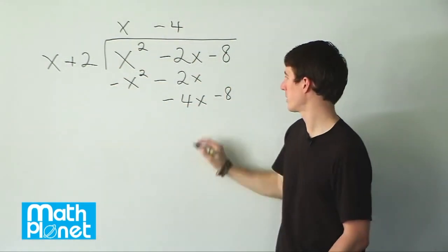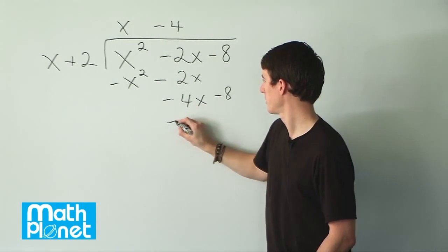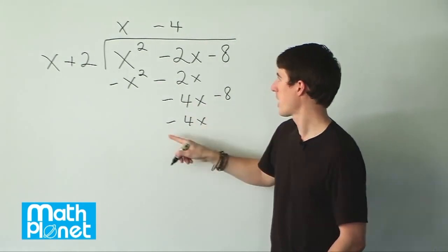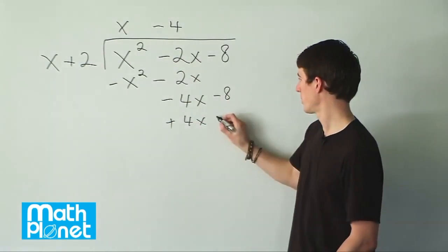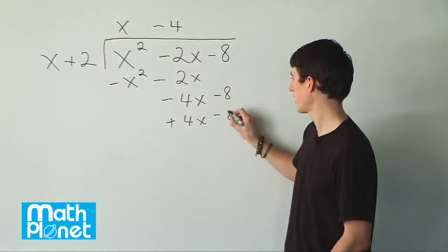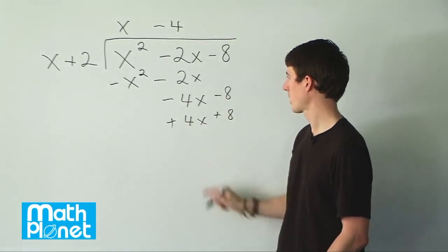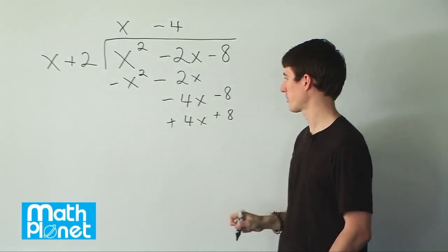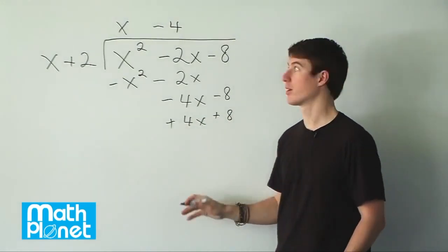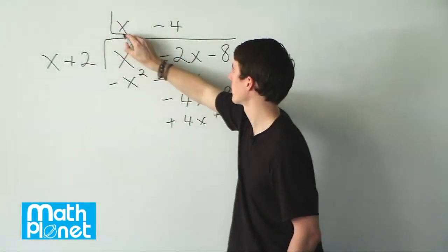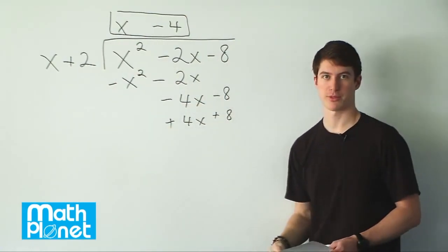If we multiply back through, we get negative 4 times x, and we're subtracting it, so it's plus. And then negative 4 times 2, which is negative 8, but it's subtraction, so it's plus 8. Then we have negative 4x plus 4x, negative 8 plus 8 — of course, everything is gone now. So this is our final answer. It's the same as factorizing, but we've done it using polynomial division.